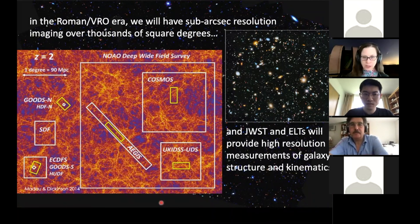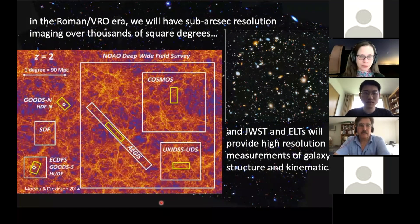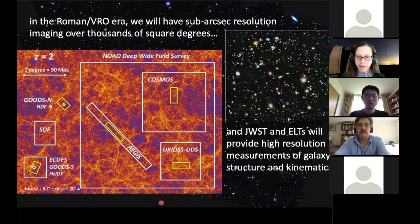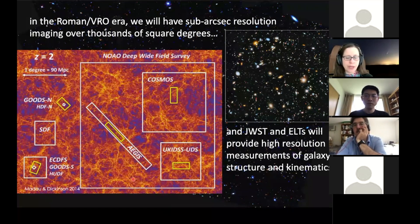Looking forward over the next decade, we will have the Vera Rubin Observatory scanning the sky and obtaining samples of billions of galaxies, the Nancy Grace Roman telescope doing sub-arcsecond resolution imaging over thousands of square degrees, and telescopes like James Webb and extremely large ground-based telescopes that can study the internal structure and kinematics of galaxies to high resolution and precision. We will have this amazing collection of data spanning a huge range of scales that we would like our models to confront, understand, and interpret.